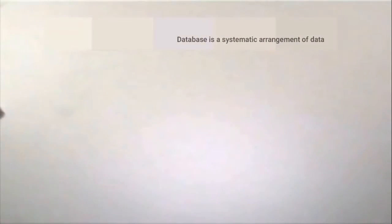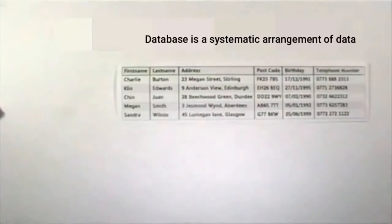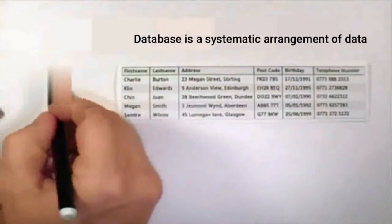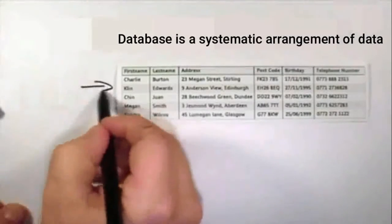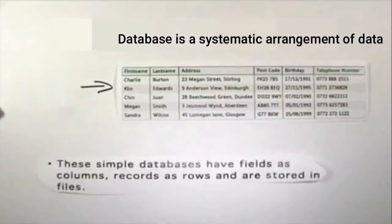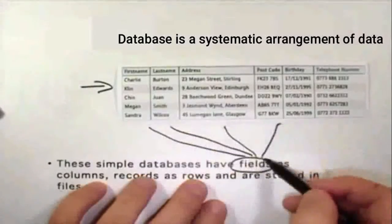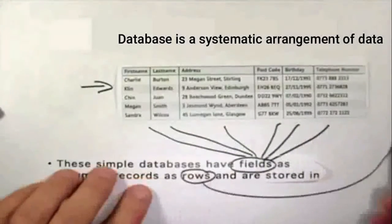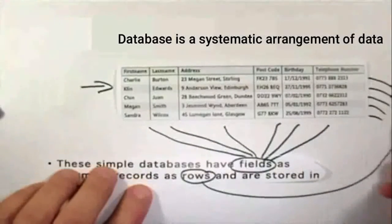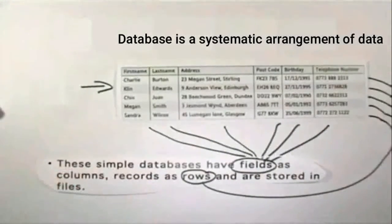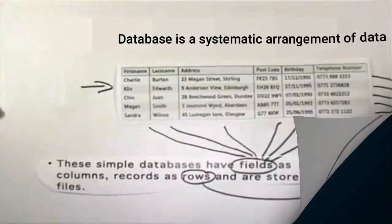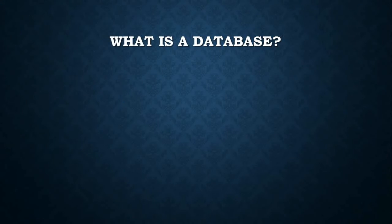So some things to remember: databases are simple stores of information. These simple databases have fields as columns, records as rows, and are stored in files.